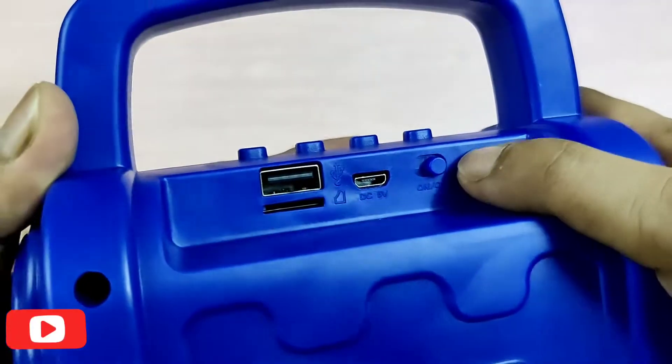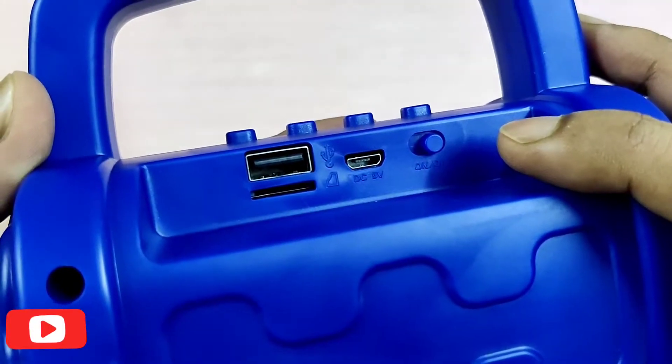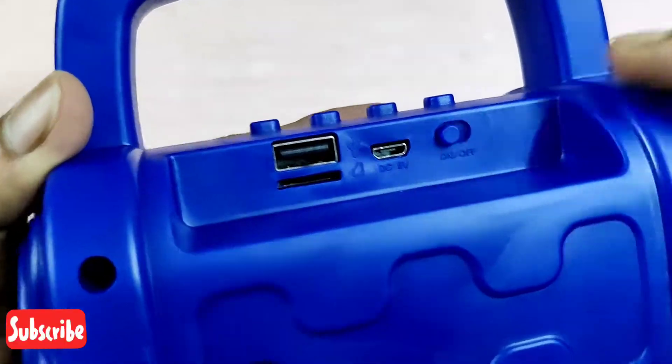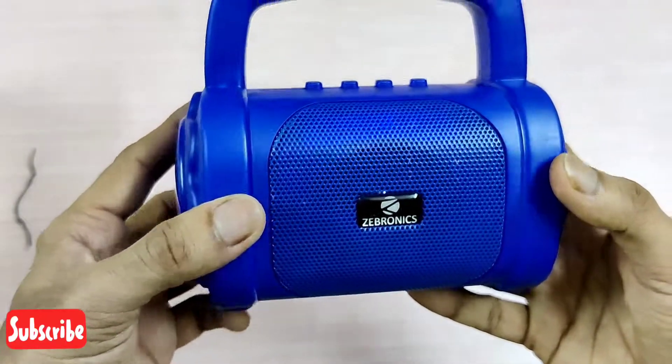And on the back side you can see this is the power button. The power switch is here, so you need to switch that on and then the light turns on.